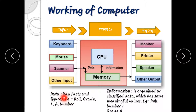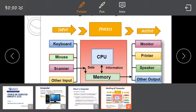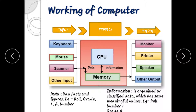Data refers to raw facts and figures. Information is data that has been organized or classified. For example, a roll number and grade are data, while the processed result becomes information.